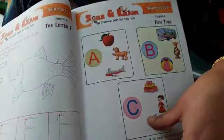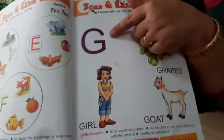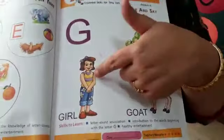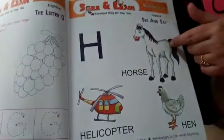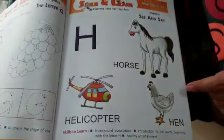Now turn the page. G, G, grapes, girl, goat. H, horse, helicopter, hen.